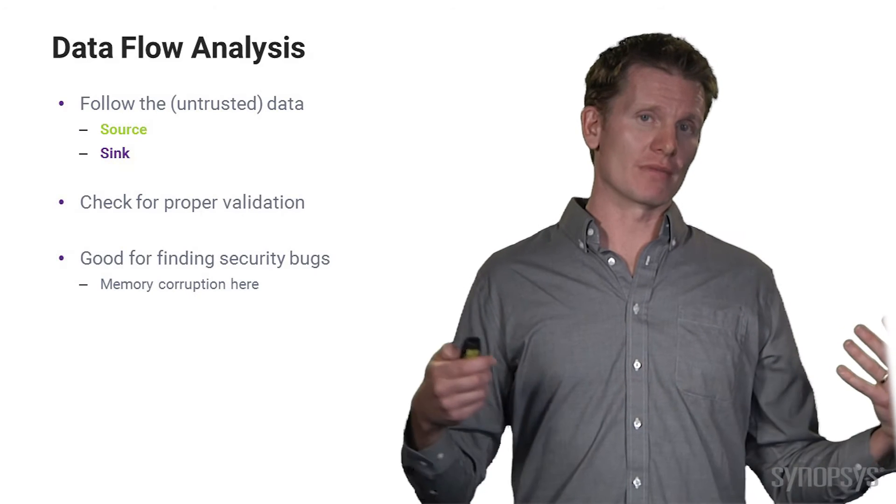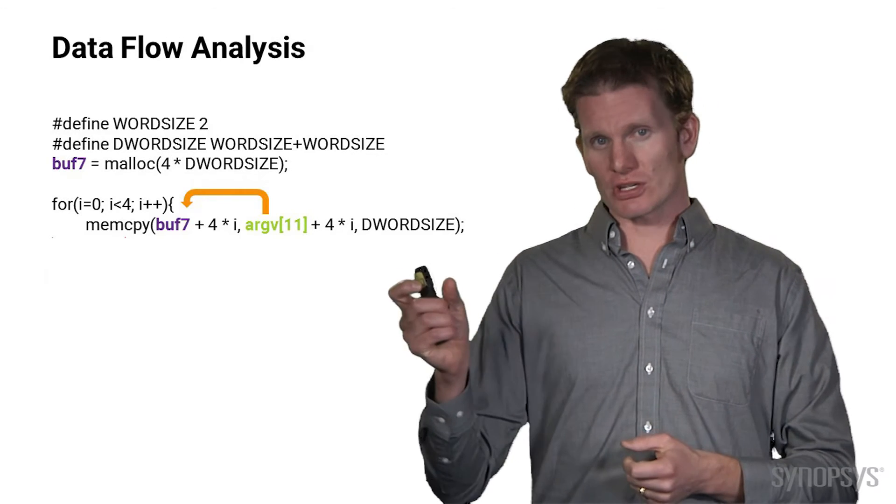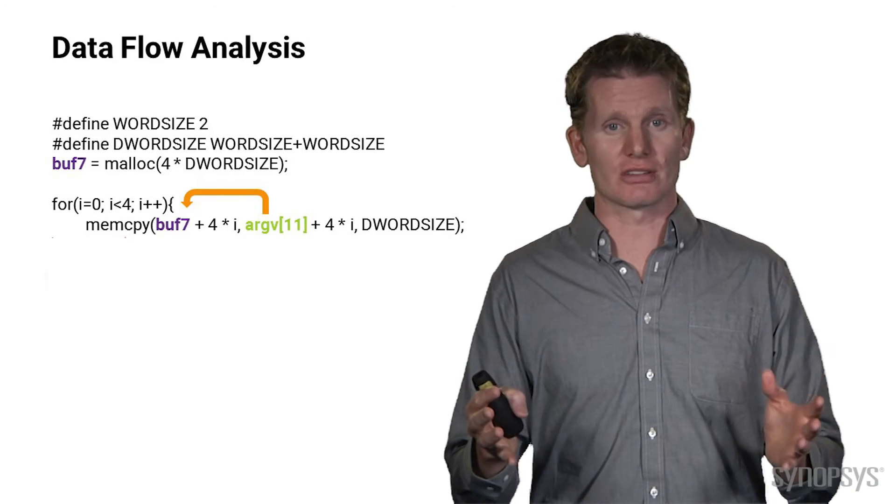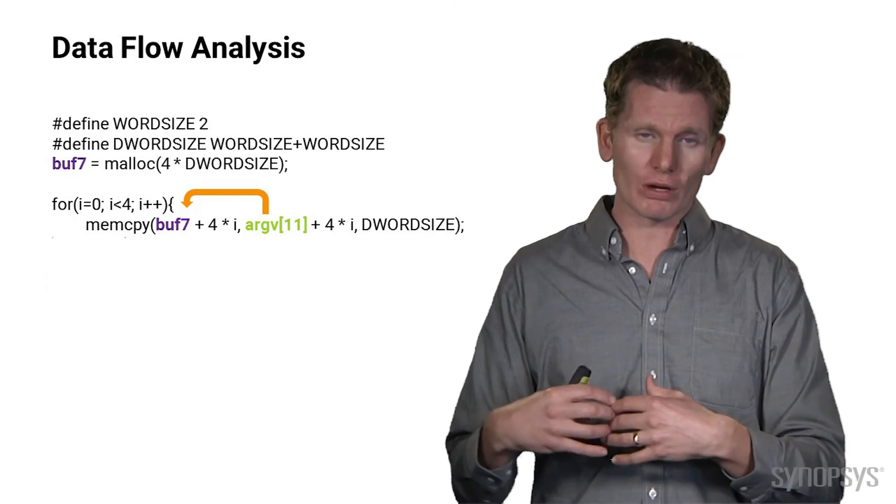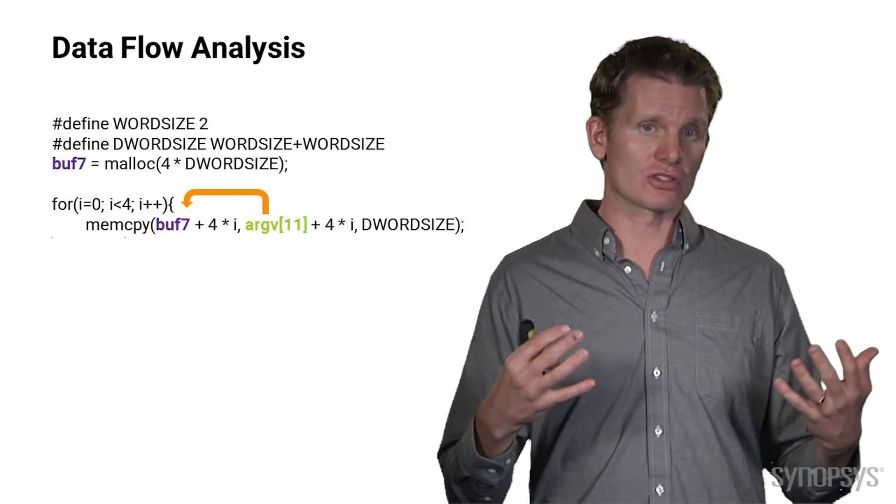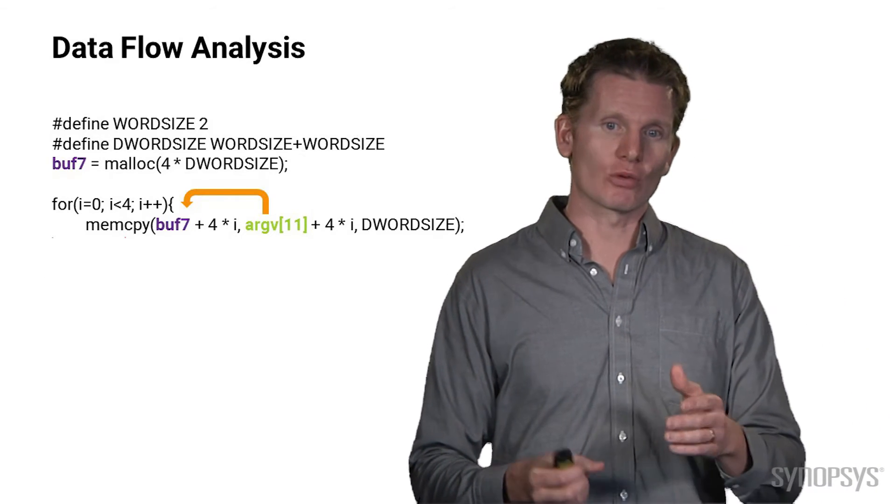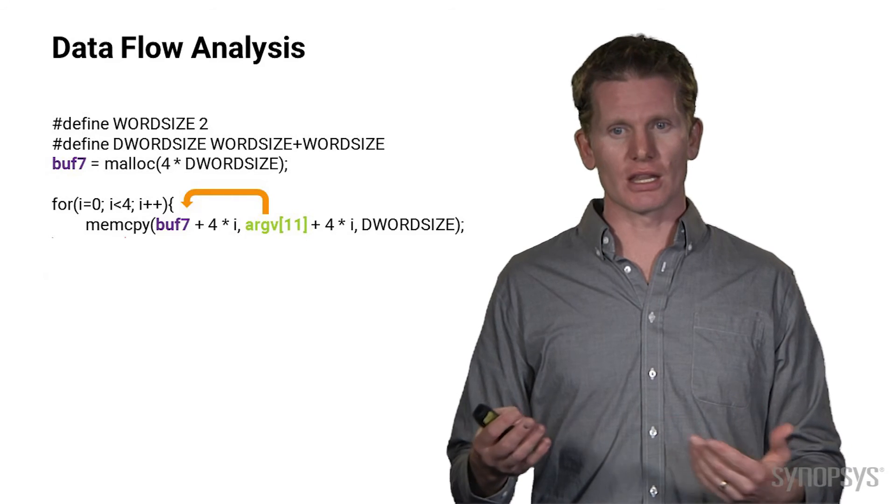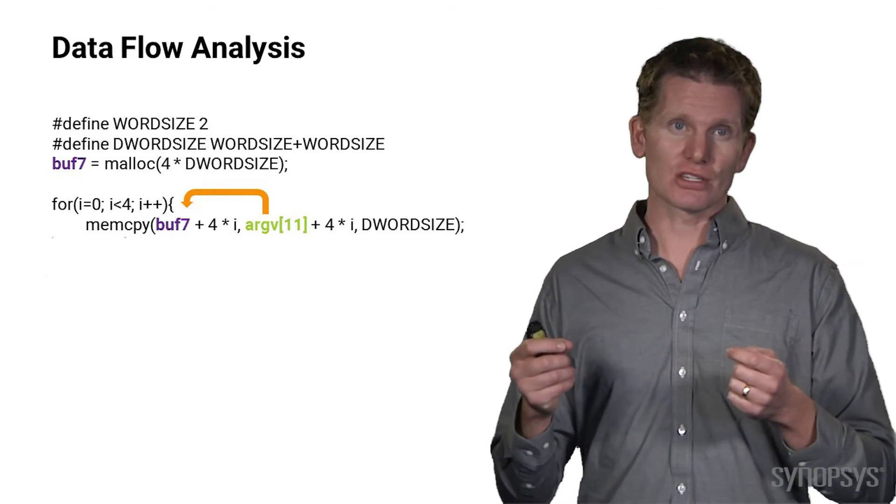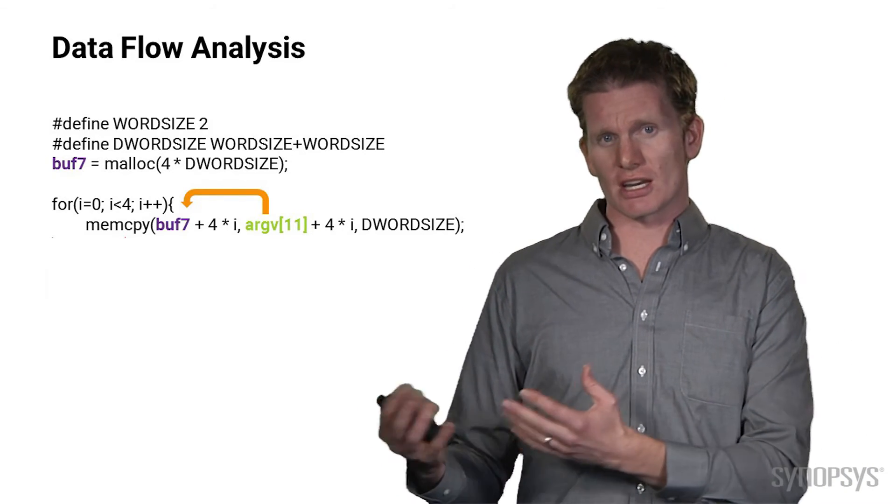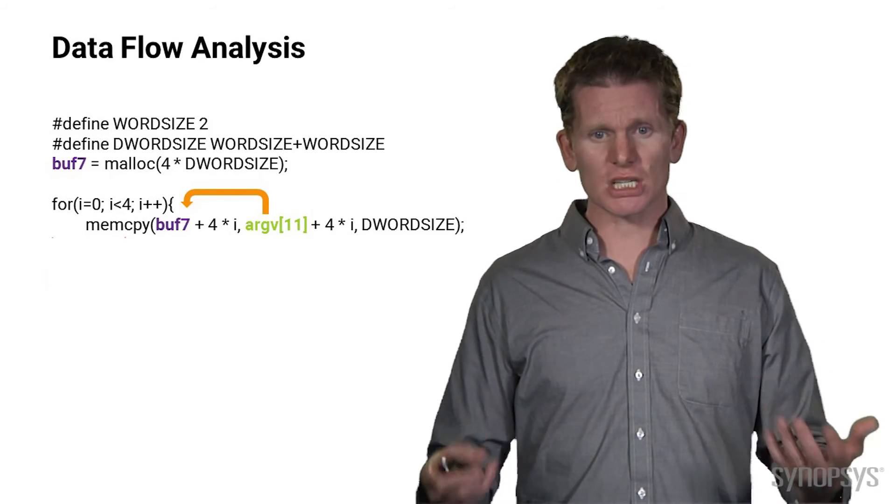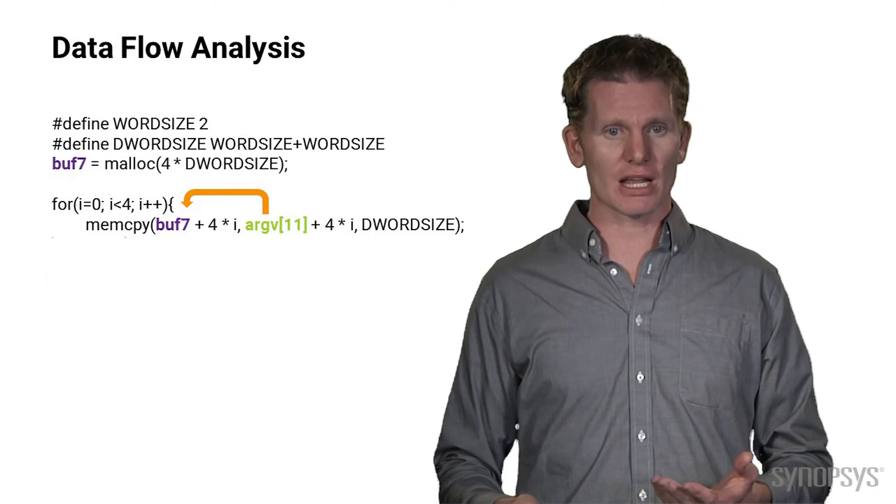Data flow analysis is probably one of the best techniques for finding security critical bugs statically. And let me show you an example of how that works. We have this idea of a source and a sink. Basically what that means is where data comes in and where it gets used or copied or ultimately goes out. And typically we're following untrusted data, not just static data that lives in a global table or something, but data that can come from a network packet, from a file, something that an attacker might have rights to supply. So if you look at this snippet of code, we can see that we're allocating with malloc some memory, and we're allocating 4 times dword size. And so 4 times 4 is 16, and then it looks like we're doing a copy loop with memcopy. And the source of the data comes from argv, which in this case represents untrusted data, some command line input. And that gets copied to this buff7, which is the pointer to the allocated memory.